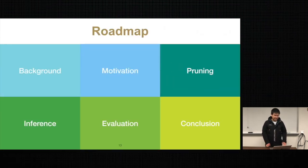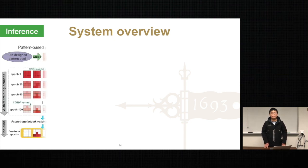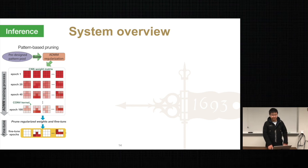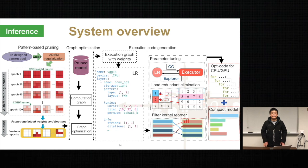Next, let's look at the second contribution: compiler-based code optimization and generation. These figures show a system overview of PatDNN. The left part is our pattern-based pruning, which we have already discussed. After getting the pruned model, PatDNN converts the model into computational graphs and applies multiple graph-based optimizations. Next is the execution code generation stage, which includes several major components: a high-level fine-grained DNN layer-wise representation, filter kernel reorder, load redundancy elimination, and automatic parameter tuning.